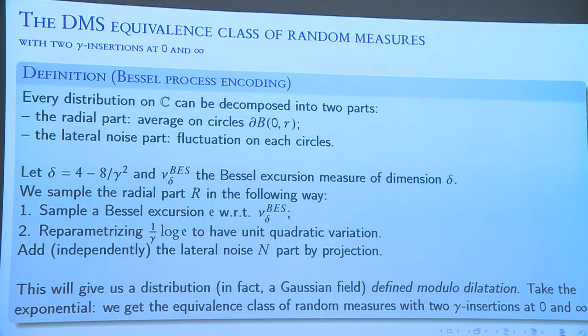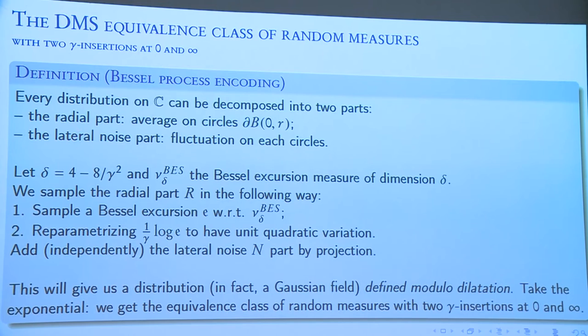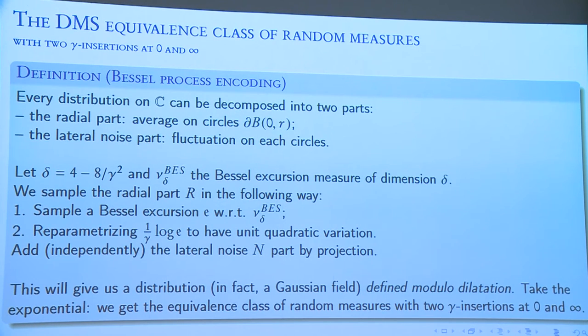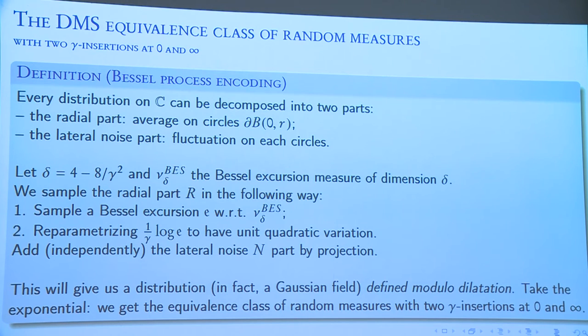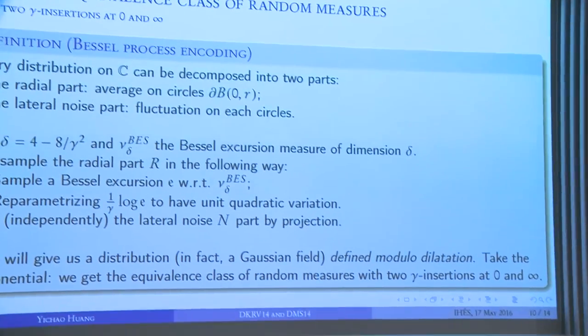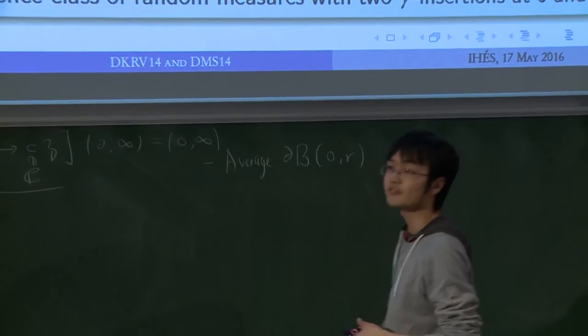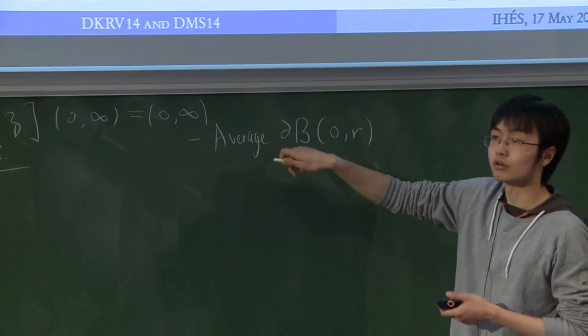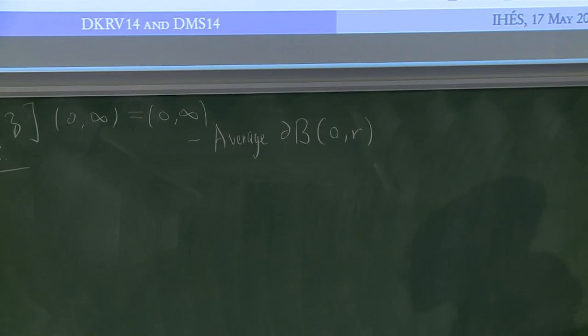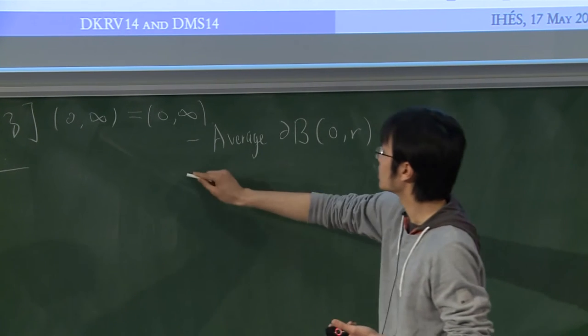Now we'll talk about the two-point construction. This is a very interesting construction in the sense that they use some kind of encoding of your surface. You can construct your surface by using a Bessel process somewhere. So the idea behind this is that if you take a function that is defined on the complex plane, you can decompose it into two parts. First, I will tell you just the average of this function on each of these circles.